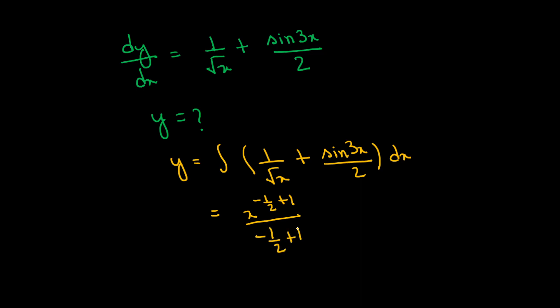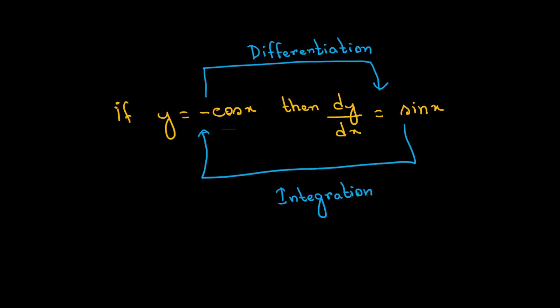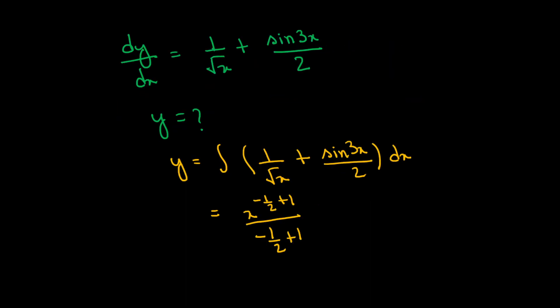And sin 3x, when we integrate, y is equal to sin 3x integrated gives minus cos 3x. So y is equal to minus cos 3x by 2 divided by the coefficient, which is 3 by 2, plus...